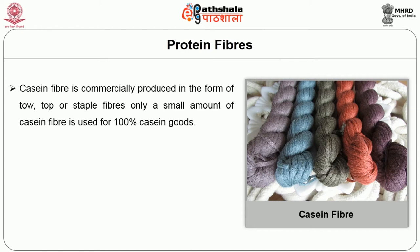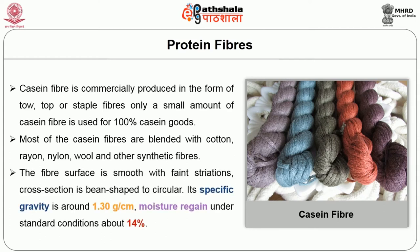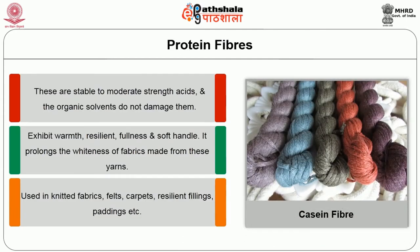Only a small amount of casein fiber is used for 100% casein goods. Most of the casein fibers are blended with cotton, rayon, nylon, wool and other synthetic fibers. The fiber surface is smooth with faint striations; cross section is bean-shaped to circular. Its specific gravity is around 1.3 grams per cubic centimeter. Moisture regain under standard conditions is about 14%. Casein is sensitive to alkalis, stable to moderate strength acids, and organic solvents do not damage it. Casein fibers exhibit warmth, resiliency, fullness and soft handle. It prolongs the whiteness of fabric made from these yarns. Casein blends are used in knitted fabrics, felts, carpet industries, resilient fillings and paddings.